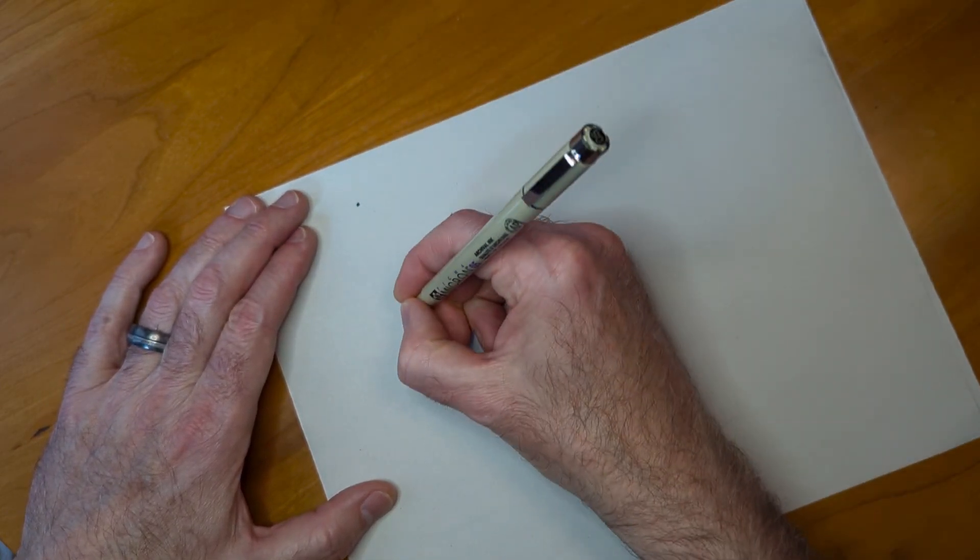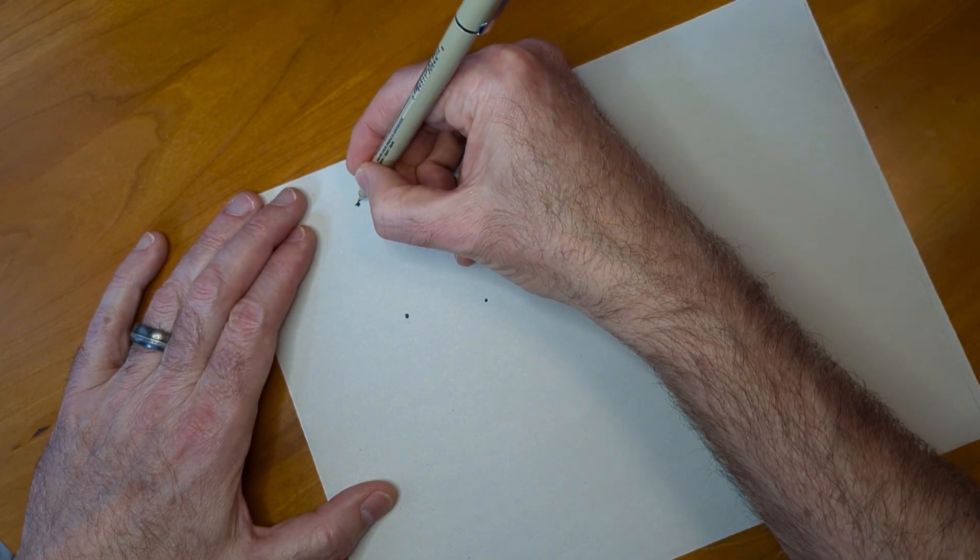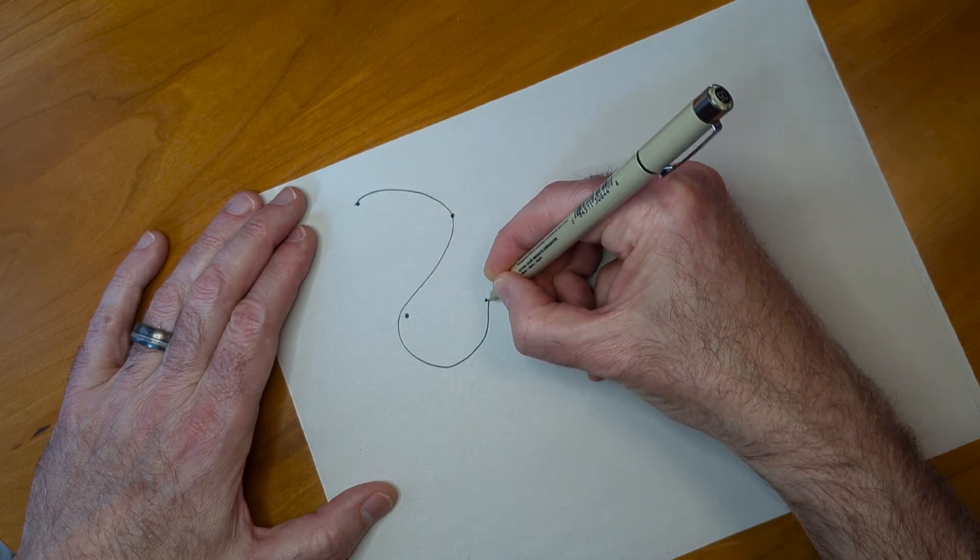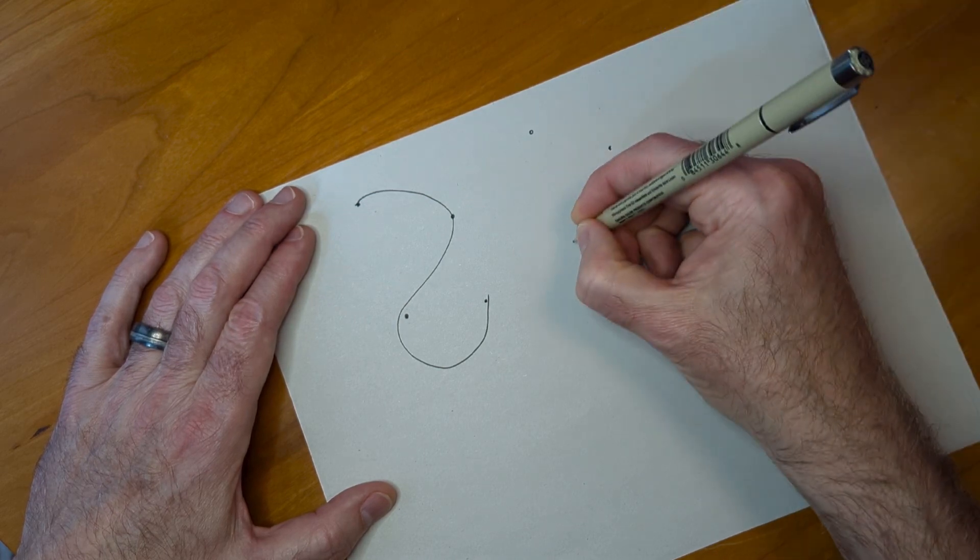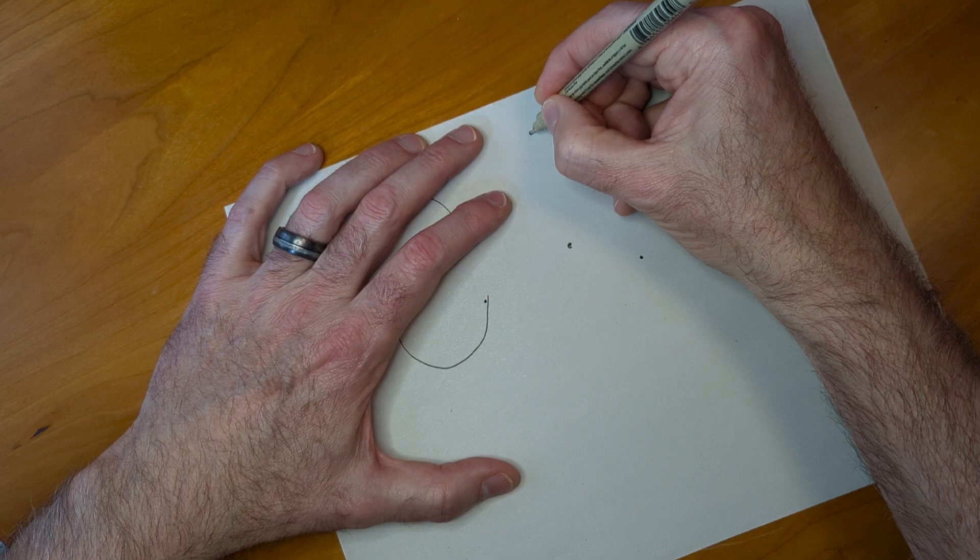So we're going to do some S's. I'm going to put down four targets and try to make an S that hits all those. That last one's a little tough going this way because your hand tends to cover it up.